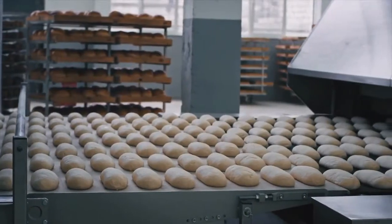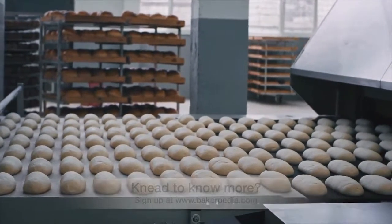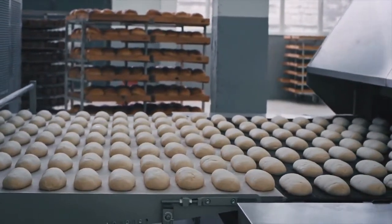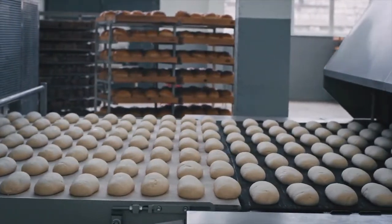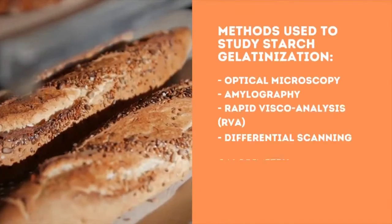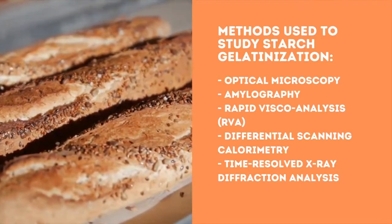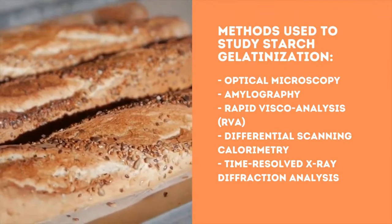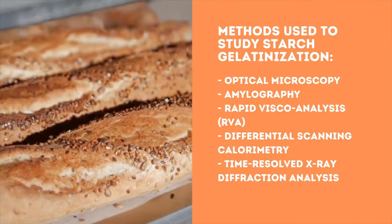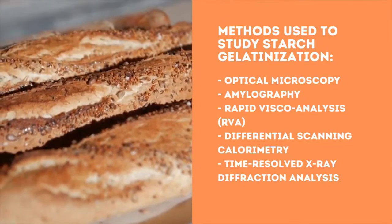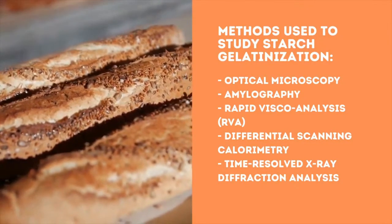Therefore, for optimum expansion volume buildup during oven spring, the dough or batter needs to remain somewhat flexible or viscous to allow leavening gases to expand. Common methods used to study starch gelatinization include: optical microscopy, amylography, rapid visco analysis (RVA), differential scanning calorimetry, and time-resolved X-ray diffraction analysis.